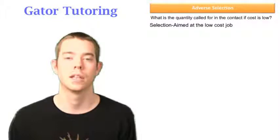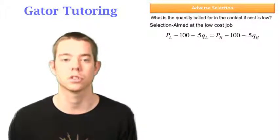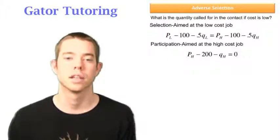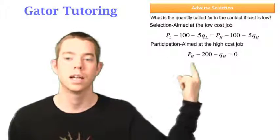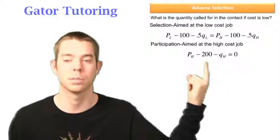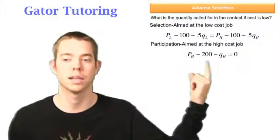So, we know that the selection constraint that's aimed at the low-cost job was this from the previous question. We also need to find the participation constraint, which is aimed at the high-cost job, which just says that the amount that we pay you is going to at least cover your cost if it is a high-cost job. And a high-cost job was represented by the 200 plus 1QH, and we're going to distribute that negative sign through.